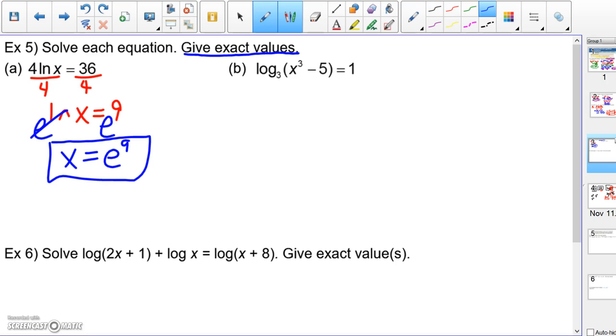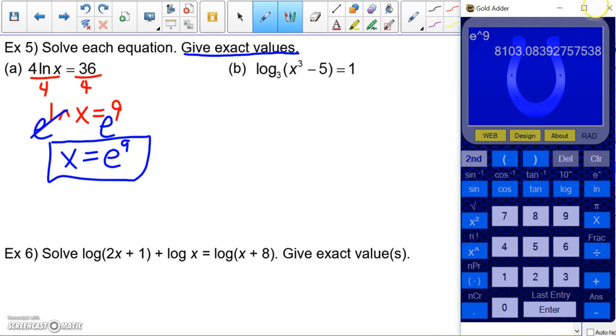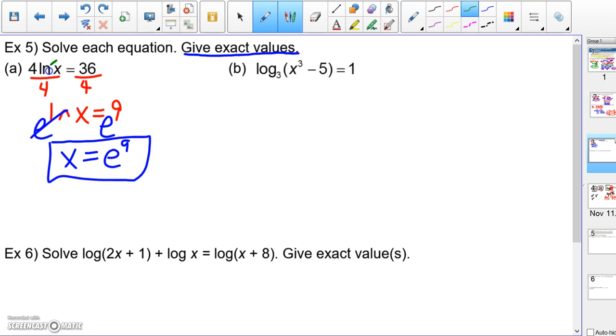Now, I guess it wouldn't hurt to see what that is, 8,103 or so, because you're supposed to look at this and say, this x number has to be greater than zero. Well, we're good. This number is greater than zero, so it works. You're going to have to remember to look at that.